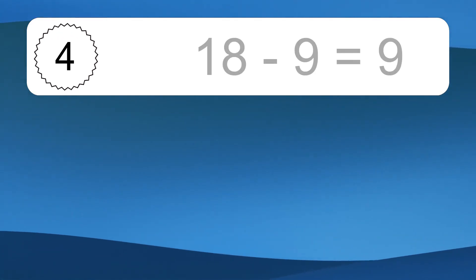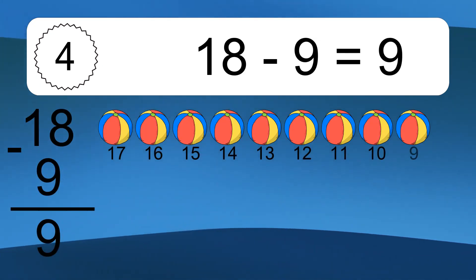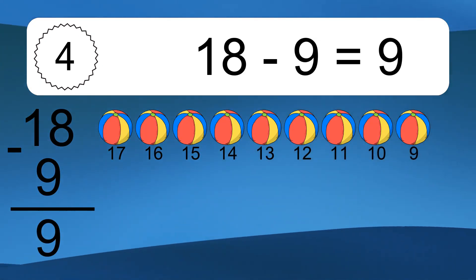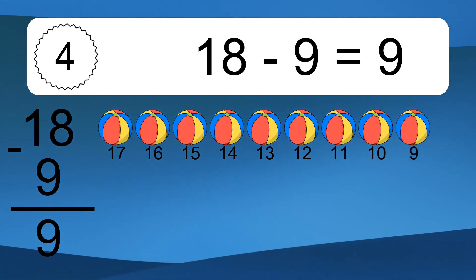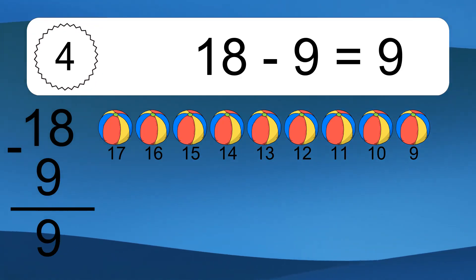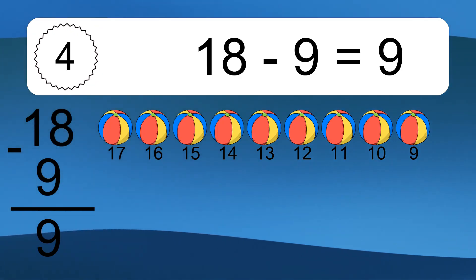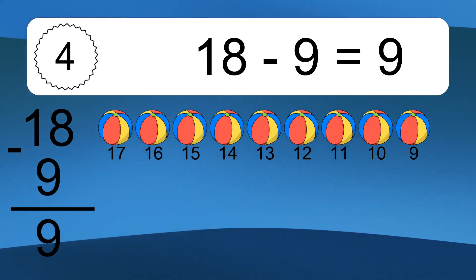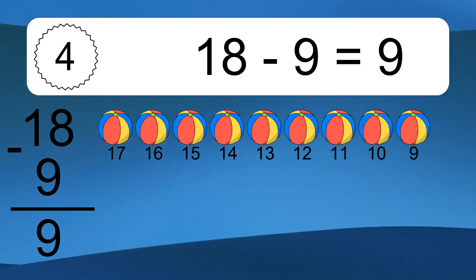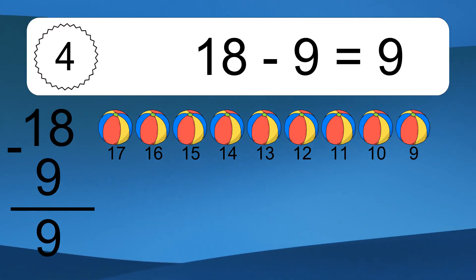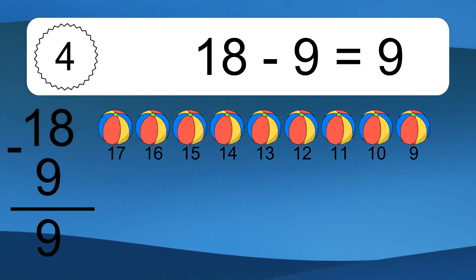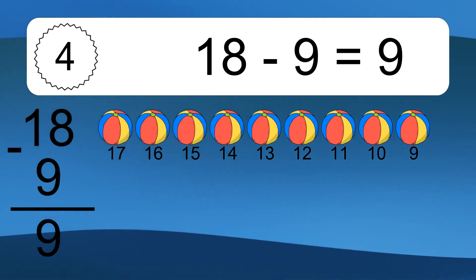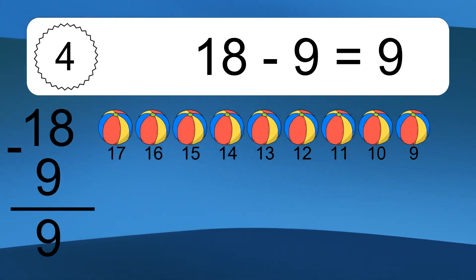18 minus 9 equals what? 18 minus 9 equals 9. Let's count it: 17, 16, 15, 14, 13, 12, 11, 10, 9.